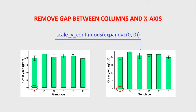Hello everyone! Today I'm going to talk to you about how to remove the gap between columns and the X axis of a bar chart in R using ggplot. As a default, a bar chart in R using ggplot has a gap between the columns and the X axis.